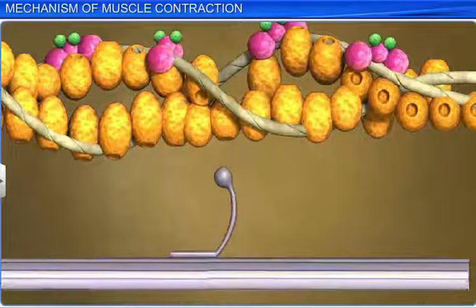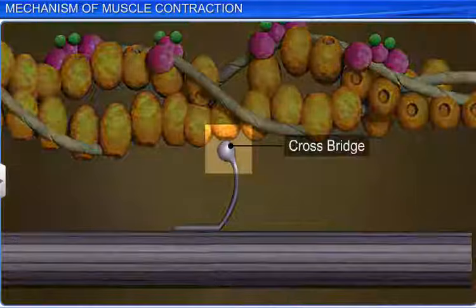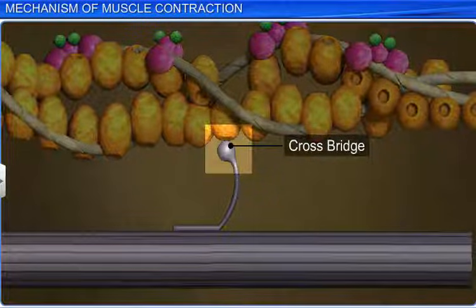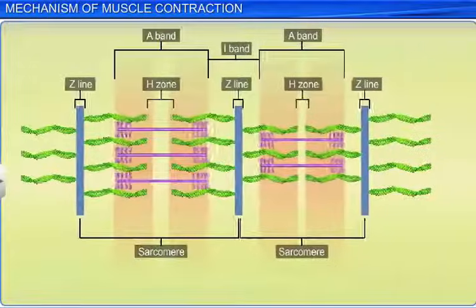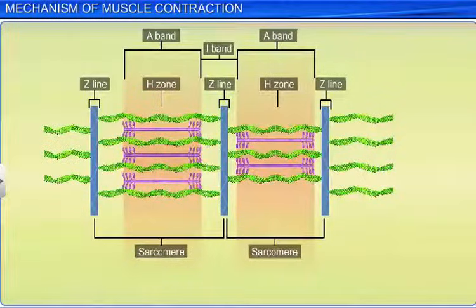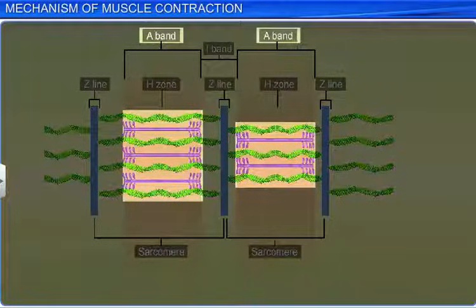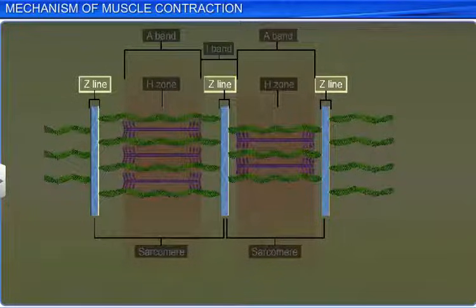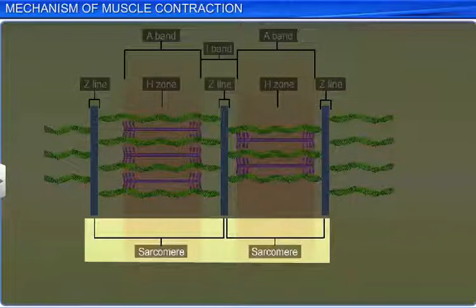Myosin binds to actin to form a cross bridge. These cross bridges are very important for muscle contraction. They pull the attached actin filaments to the center of the A-band. Moreover, the Z-line attached to the actins is also pulled inwards, shortening the sarcomere, thereby causing a muscle contraction.